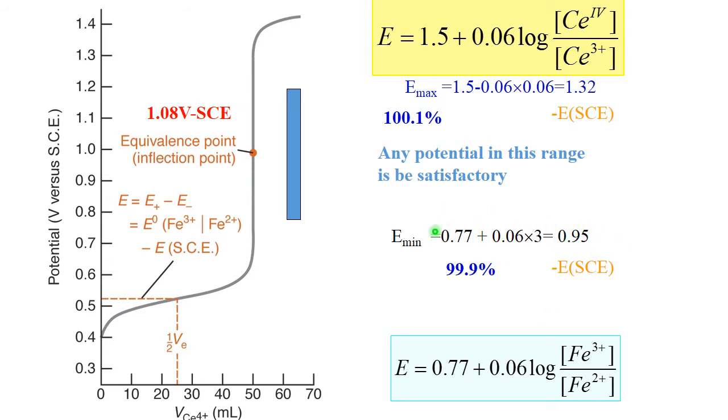And redox potential of this will be 0.95. That's where we can stop titration having no error. Or we can proceed to equivalence point, which is 1.08 volts minus your redox potential of reference electrode. Or we can proceed even further when we still have very little excess of cerium.